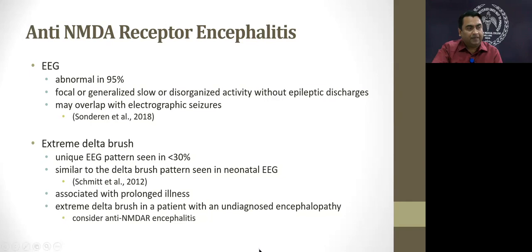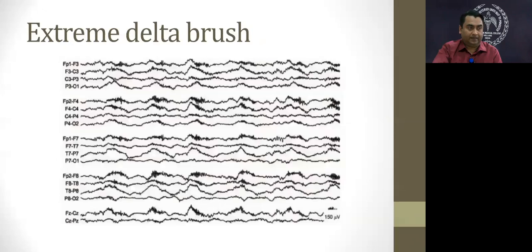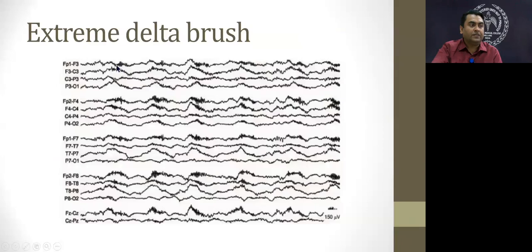A typical EEG pattern found in these patients — in about a third — is the extreme delta brush, named after a delta brush pattern seen in neonatal EEGs. This may be associated with more prolonged illness, and if you encounter an undiagnosed encephalopathy with extreme delta brush on EEG, NMDA encephalopathy should definitely be considered. It is a generalized slow wave delta background with areas of fast activity, usually beta or faster.